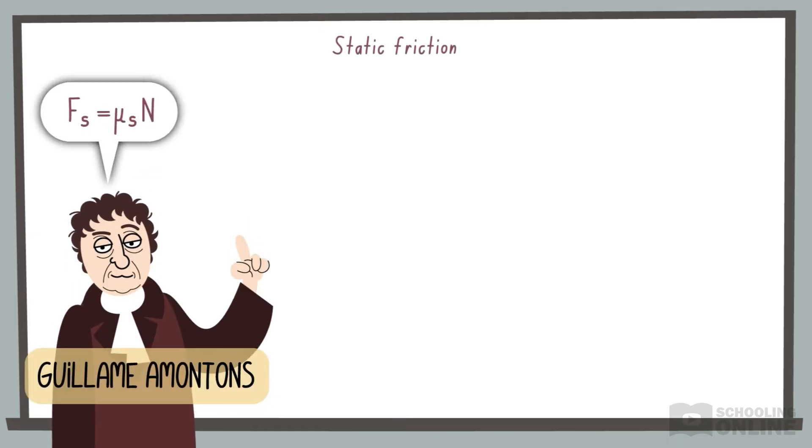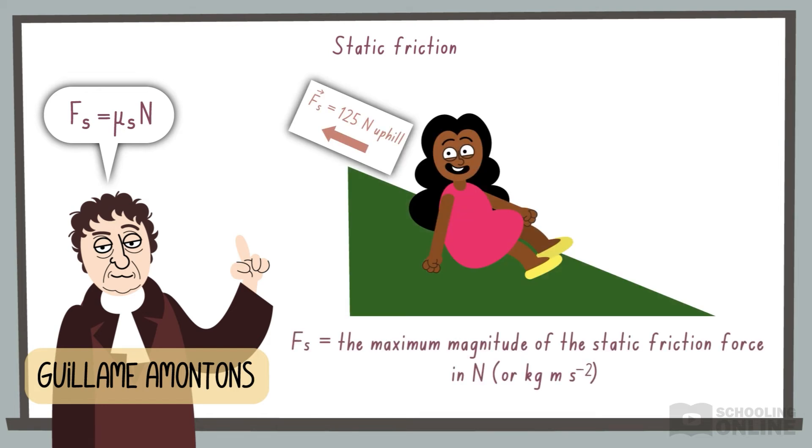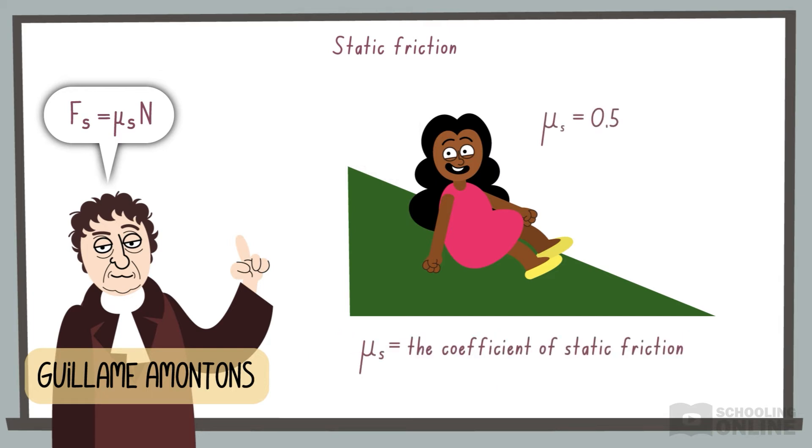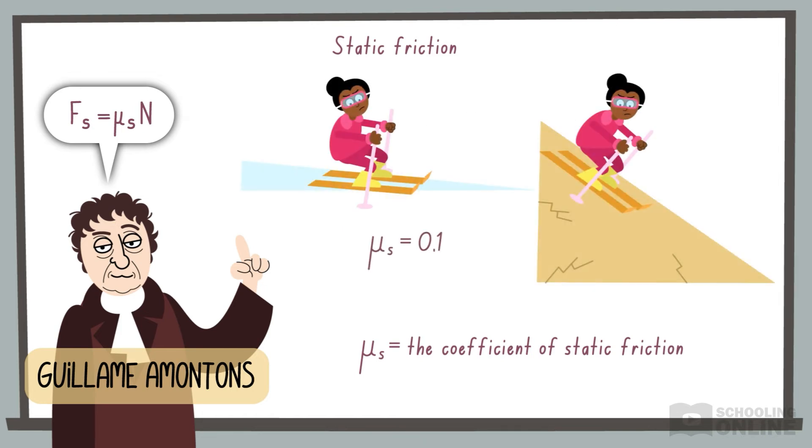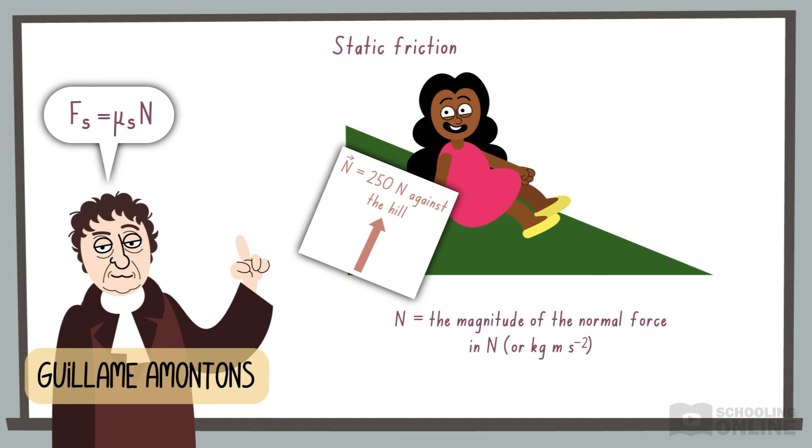Let's consider the formula for static friction. Fs is the maximum magnitude of the static friction force in Newtons. μs is the coefficient of static friction, which is a number that is greater than or equal to zero. A small value occurs when the two surfaces are slippery, but a large value means they are grippy. Finally, N is the magnitude of the normal force in Newtons.